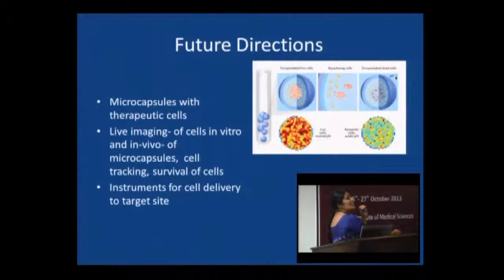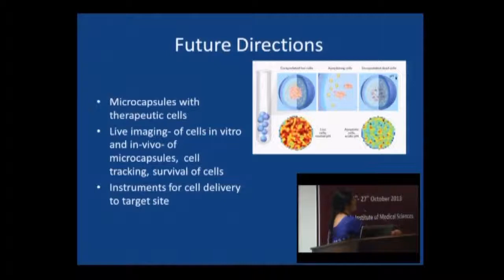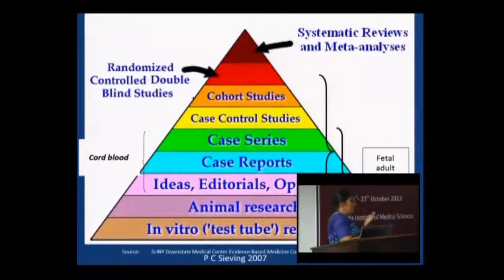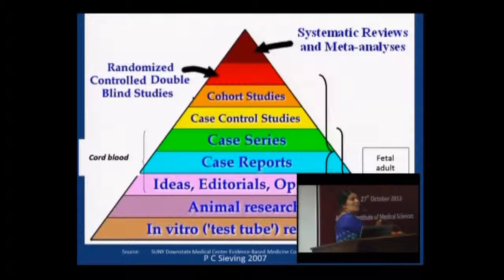Future directions: all these exocrine glands need to be encapsulated. The advantage of the capsule is secretory substances come out, but immune cells can't reject them. Live cell imaging is a challenge, and instruments for cell delivery are another issue in ophthalmology — RPE cells delivered by a special instrument have led to huge success. In evidence-based medicine, most of these stem cell data are at the bottom of the pyramid — mostly in vitro or animal experiments, case reports, and a couple of randomized clinical trials. The best thing would be to have a very good systematic review.